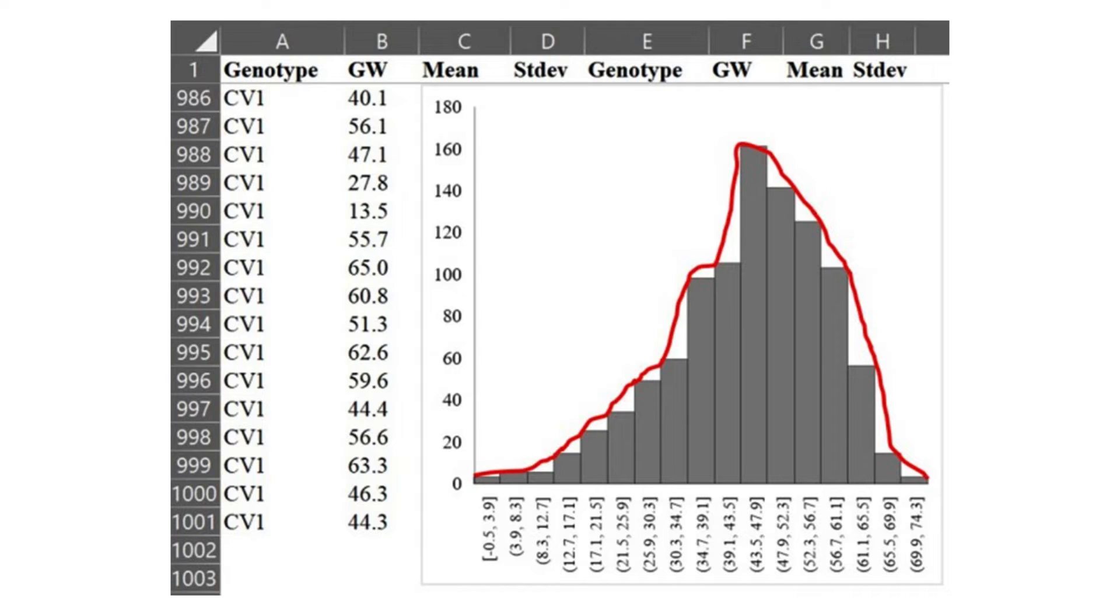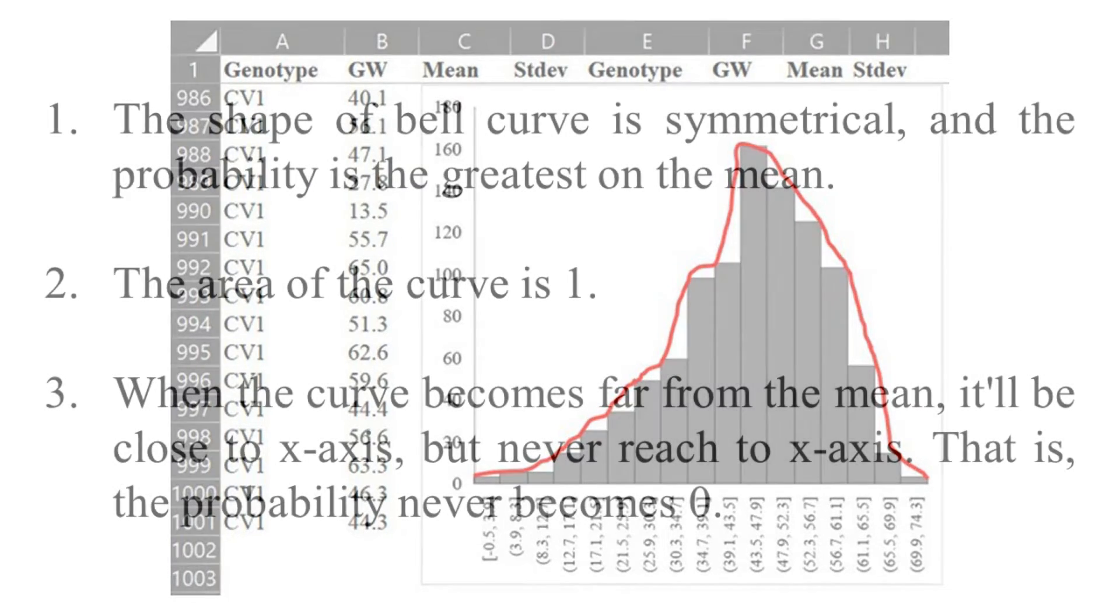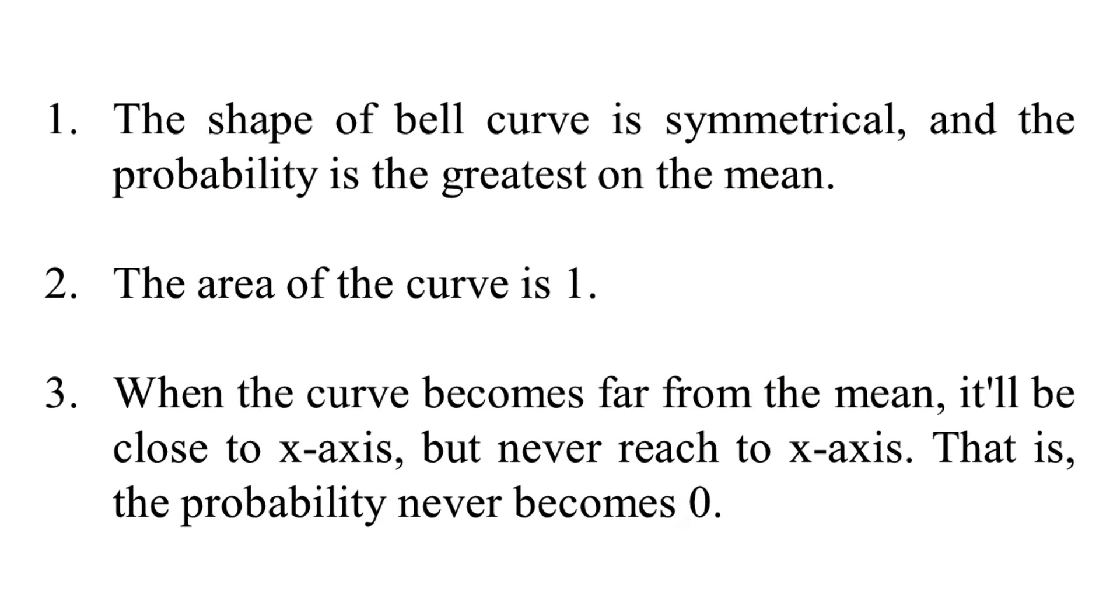The main characteristics of normal distribution are: First, the shape of the bell curve is symmetrical and the probability is greatest at the mean. Second, the area of the curve is 1. Third, when the curve becomes far from the mean, it'll be close to the x-axis but never reach the x-axis—that is, the probability never becomes zero.